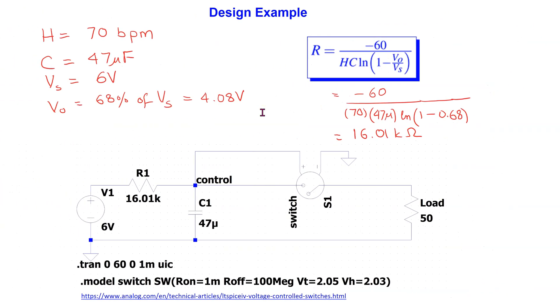Let us consider a design example and its LTSpice implementation. Suppose the desired heart rate is 70 beats per minute. We select typical values of C and Vs.